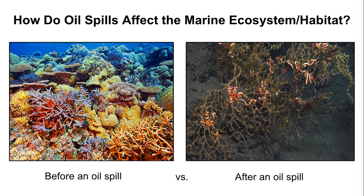How do oil spills affect the marine ecosystem? One of the long-lasting effects is the disruption of food chains, bringing even more pressure to the ecological state of marine biodiversity. For instance, phytoplankton is at risk. These microscopic creatures are a primary food source for many members of the marine ecosystem, but absorb enough toxins in an oil spill to make them unsafe to eat.